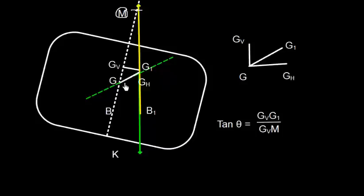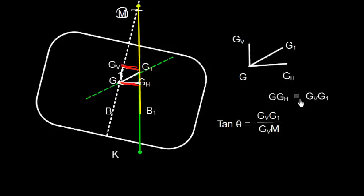G shifted to G1 with two components: GGH (horizontal) and GGV (vertical). From basic trigonometry, this forms a right angle triangle where this angle is 90 degrees and the angle of list is theta. So tan theta is going to be GVG1 divided by GVM.